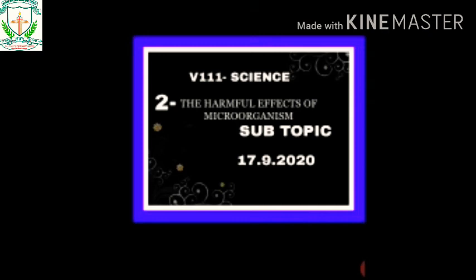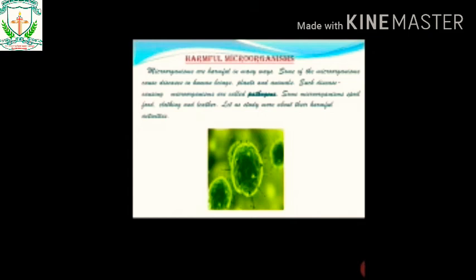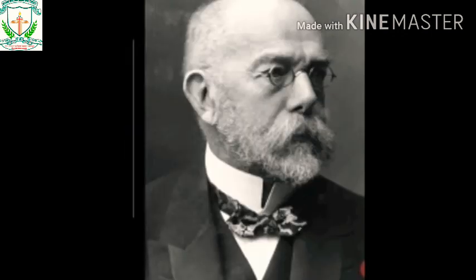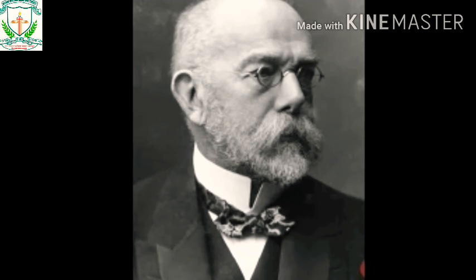Some cause diseases in human beings, plants and animals. Such disease-causing microorganisms are called pathogens. Microbial diseases that can spread from an infected person to a healthy person through air, water, food, or physical contact are called communicable diseases. Robert Koch discovered the bacterium Bacillus anthracis, which causes anthrax disease.